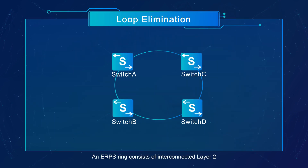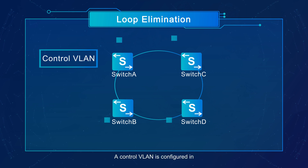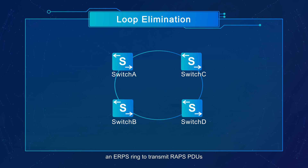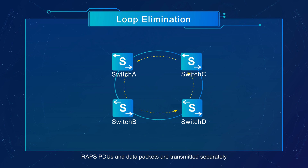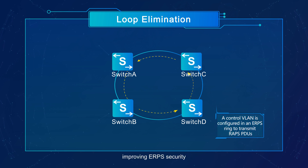An ERPS ring consists of interconnected layer 2 switching devices configured with the same control VLAN. A control VLAN is configured in an ERPS ring to transmit RAPS PDUs. RAPS PDUs and data packets are transmitted separately, improving ERPS security.